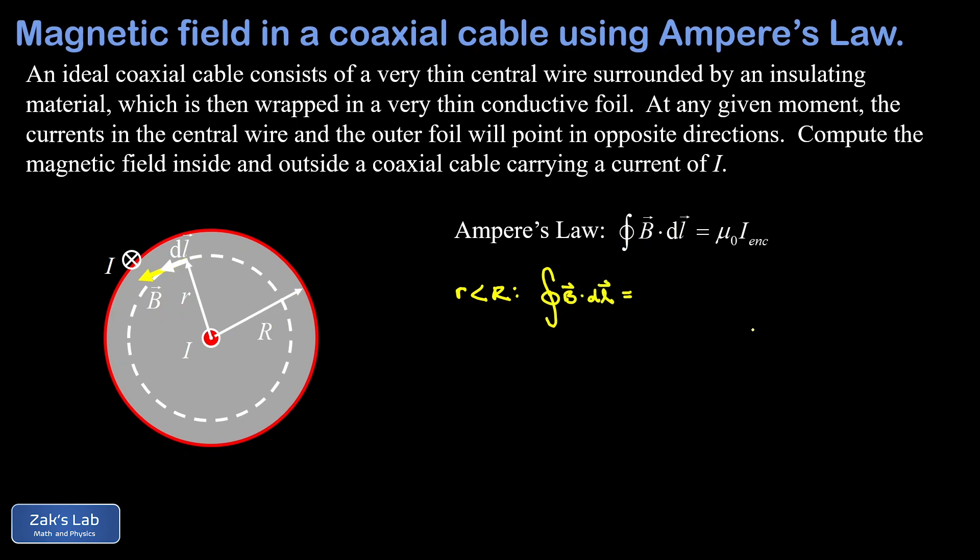Because the magnetic field is always parallel to the path increment dl vector, that dot product is trivial and reduces to just the product of the magnitudes of B and dl. We employ the usual trick of saying that by symmetry there's no way the magnitude of B could be changing along this loop because that loop shares the same symmetry as the wire itself. That means B can be factored out of the integral.